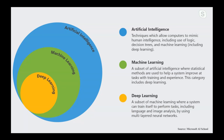Machine learning is a subset of artificial intelligence where statistical methods are used to help a system improve at a task with training and experience. This category includes deep learning. What is deep learning? Deep learning is a subset of machine learning where a system can train itself to perform tasks including image analysis by using multi-layered neural networks. So we see that deep learning is a part of machine learning, and machine learning is also a part of artificial intelligence.